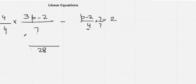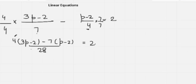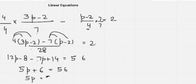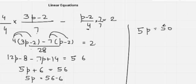So the equation becomes 4 times (3p minus 2) minus 7 times (p minus 2) equals 2 times 28, which is 56. Expanding the brackets: 12p minus 8 minus 7p plus 14 equals 56. Combining like terms: 5p plus 6 equals 56. Subtracting 6 from both sides: 5p equals 50, so p equals 10. That is our answer.